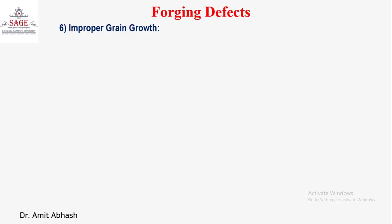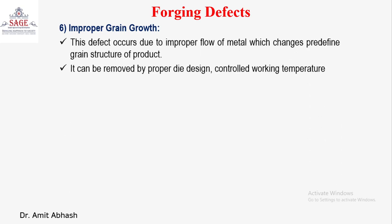The sixth defect is improper grain growth. This defect occurs due to improper flow of the material, which changes the predefined grain structure of the product. If we have a product and we are cooling it at a very slow rate, atoms will get sufficient time to diffuse and form a greater grain size — that is, a coarse grain structure — due to the slow cooling rate. Adjacent grains will diffuse into each other to form a coarse type of grain structure. This can be removed by proper die design and controlled working temperature.